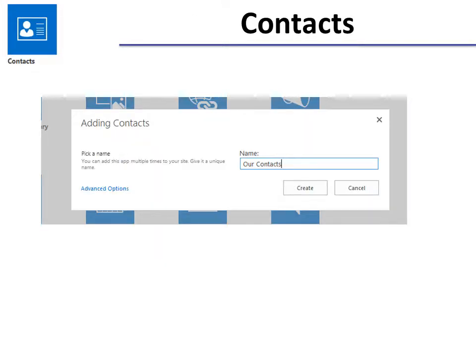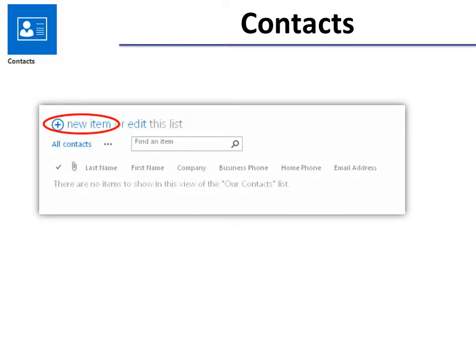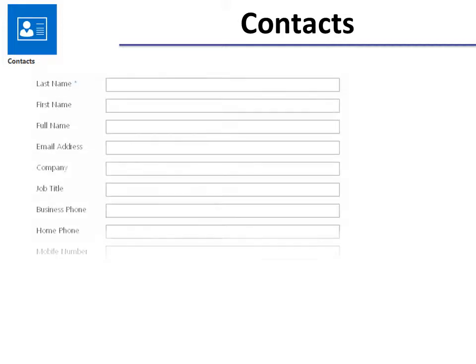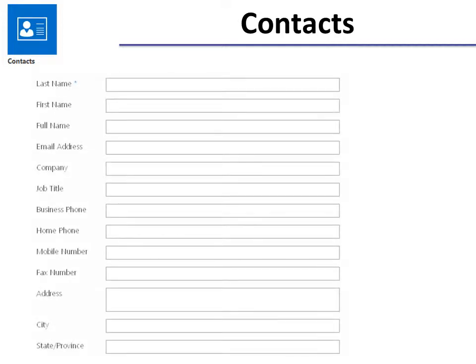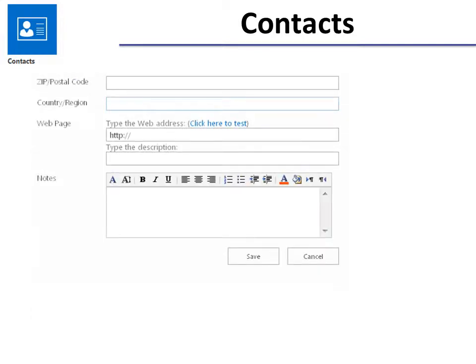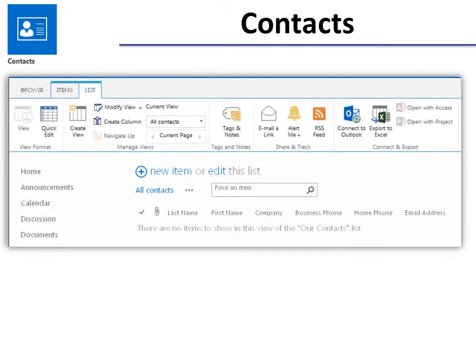Contacts: click Contacts and give it a name. Click Create and it's automatically a list that has all of these fields in it. Click New Item and you can see the fields: last name, first name, full name, etc. If you scroll down farther you will see more fields as well. You just enter your contacts and then click Save. If you want to add more columns, it's easy to do just by clicking Create Column. For example, if you wanted to say this is a hot lead or this is a pet owner — whatever is important to you in your business.